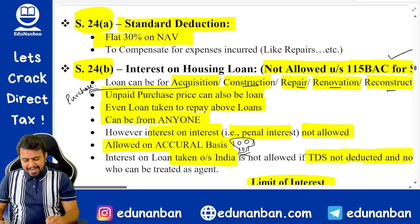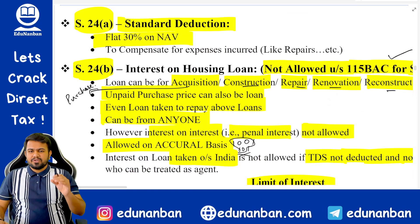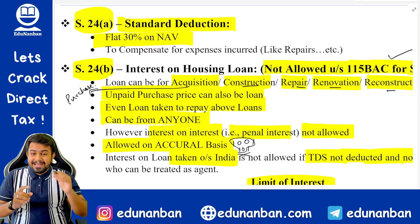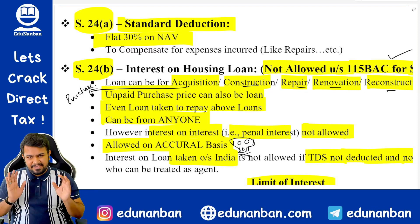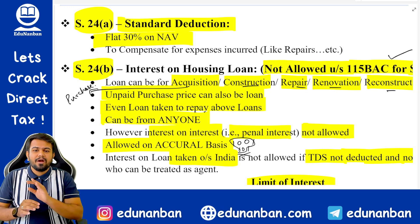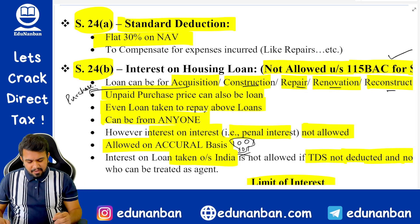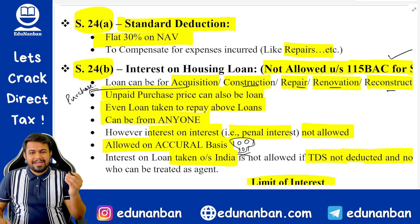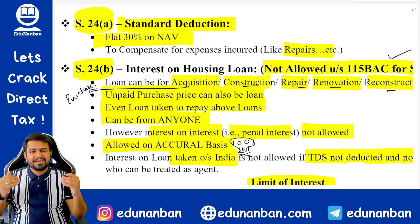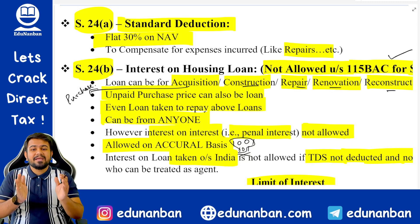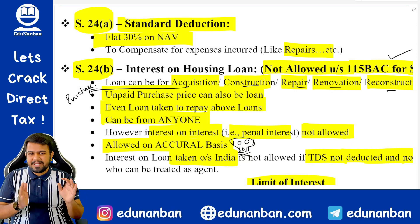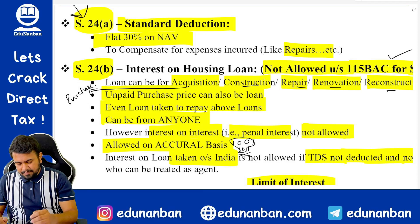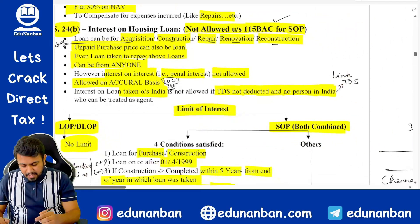Section 24A provides a standard deduction which is a flat 30% of NAV. Take the NAV, take 30% of NAV — it is allowed as deduction. Since this 30% is allowed, the act will not allow any other deduction, so repair, insurance, painting, carpenter work, or any other expense done on the house property will not be allowed as deduction.